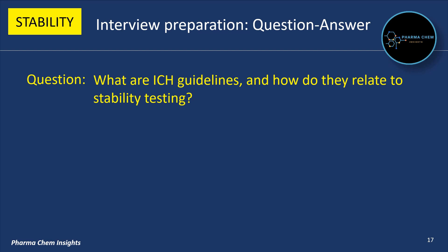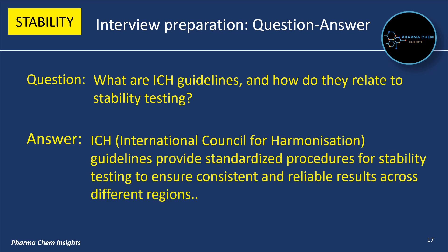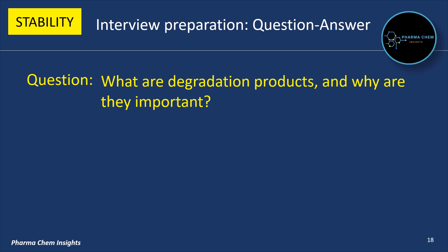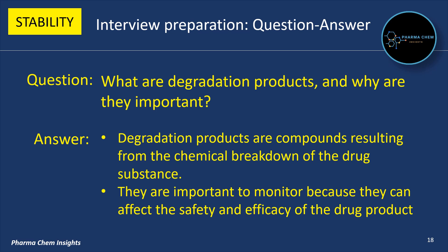Next question: What are ICH guidelines and how do they relate to stability testing? ICH — International Council for Harmonization — guidelines provide standardized procedures for stability testing to ensure consistent and reliable results across different regions. Degradation products are compounds resulting from the chemical breakdown of the drug substance, and they are important to monitor because they can affect the safety and efficacy of the drug product.